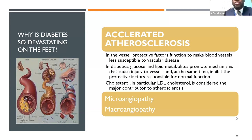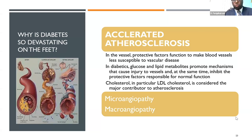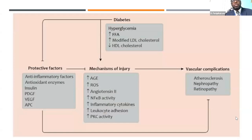We end up with microangiopathy — small vessel disease — seen in the eyes, kidneys, and brain. Then macroangiopathy — large vessel disease — affecting the toes, legs, and abdomen. This busy diagram relates diabetes to the protective factors that are lost because of hyperglycemia and abnormal cholesterol, leading to vascular complications including both micro and macroangiopathy in the legs, kidneys, and eyes.